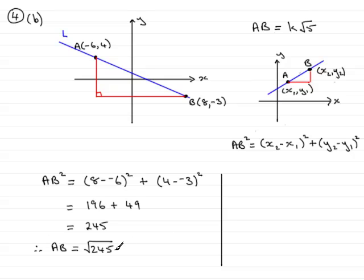So therefore, what we have is AB is equal to the square root of 49 times 5. 49 times 5 is 245. And this is the same as the square root of 49 multiplied by the square root of 5. And the square root of 49 is 7. So we end up with 7 root 5.